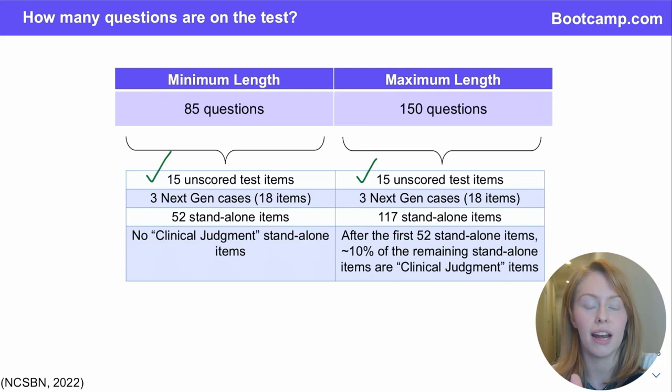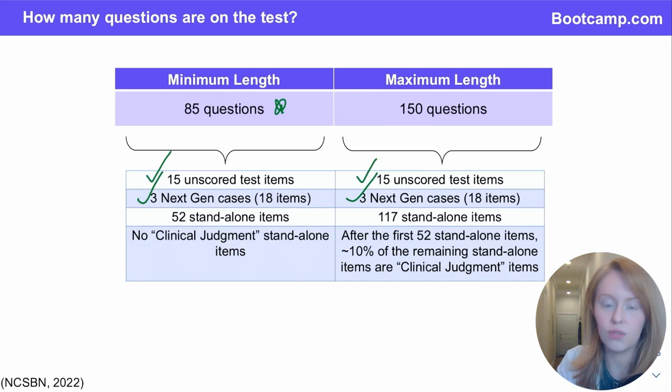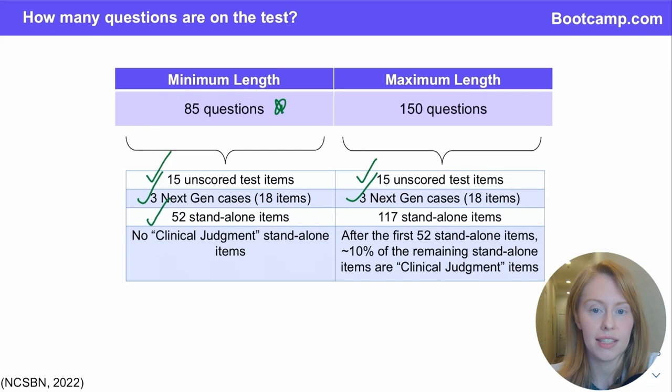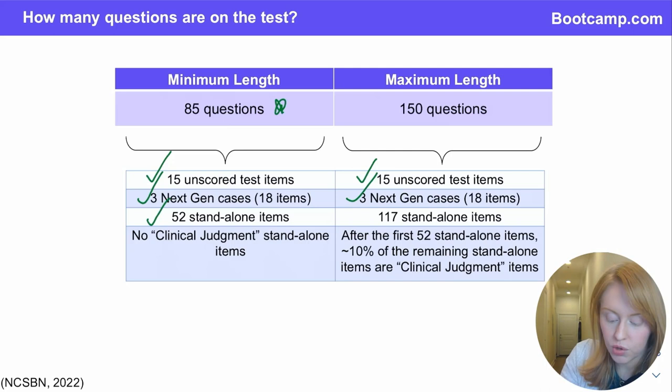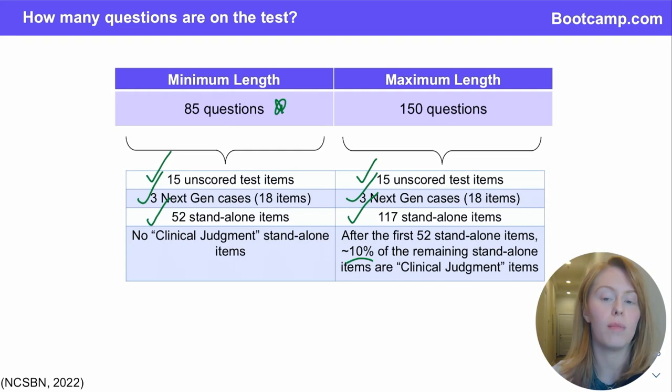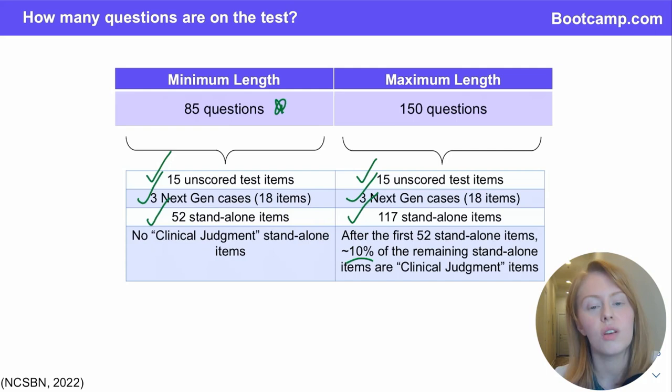They just appear randomly within your first 85 questions. Also in your first 85 questions, every candidate answers three next-gen cases for a total of 18 items. Then everyone answers at least 52 standalone items — these are your more familiar NCLEX style questions that aren't associated with a case study. Then beyond that, if you should require longer than a minimum length exam, up to 117 standalone items, then 10% of that remainder are made up of a specialty type of item called a clinical judgment item.